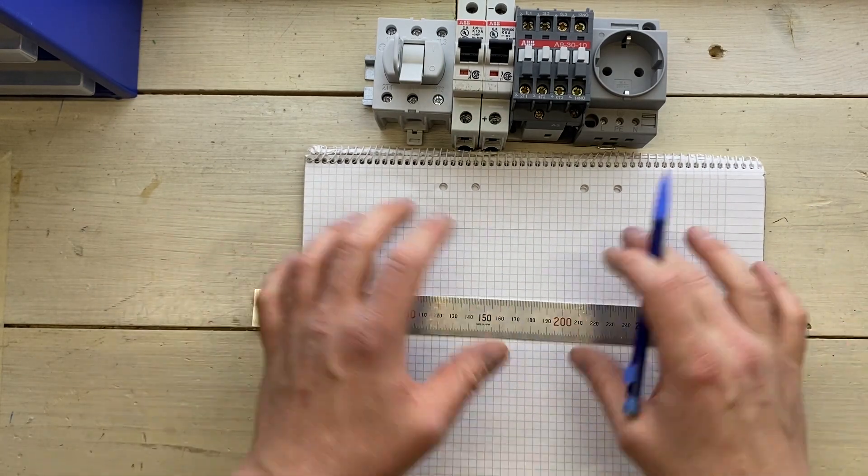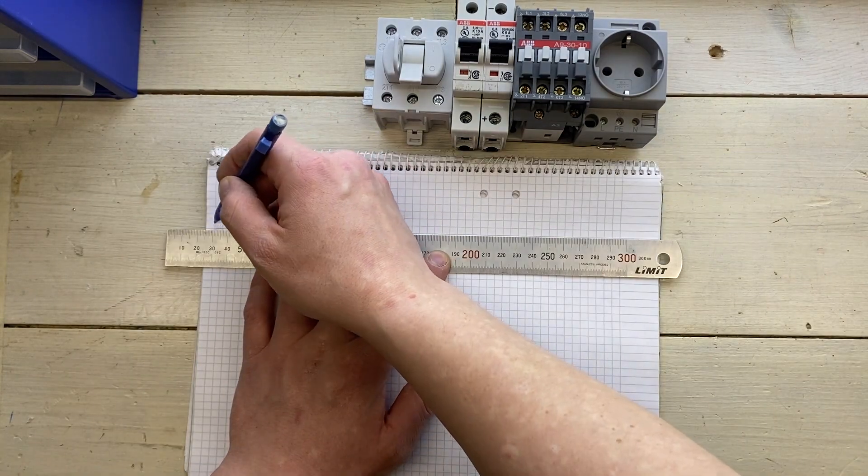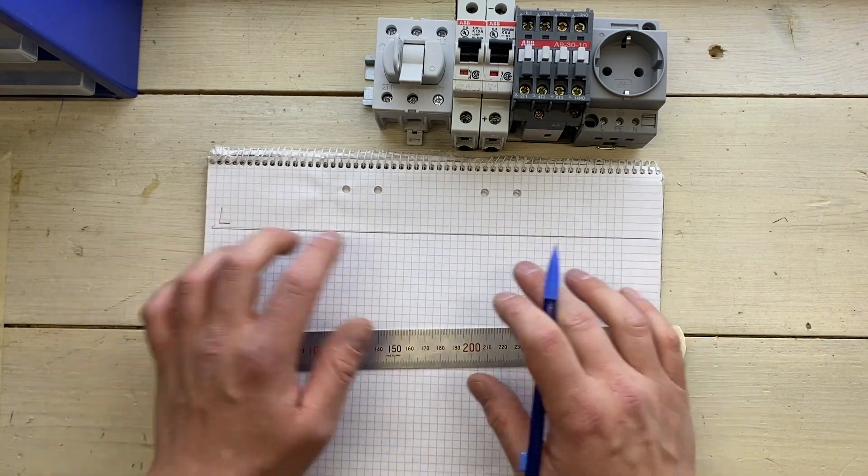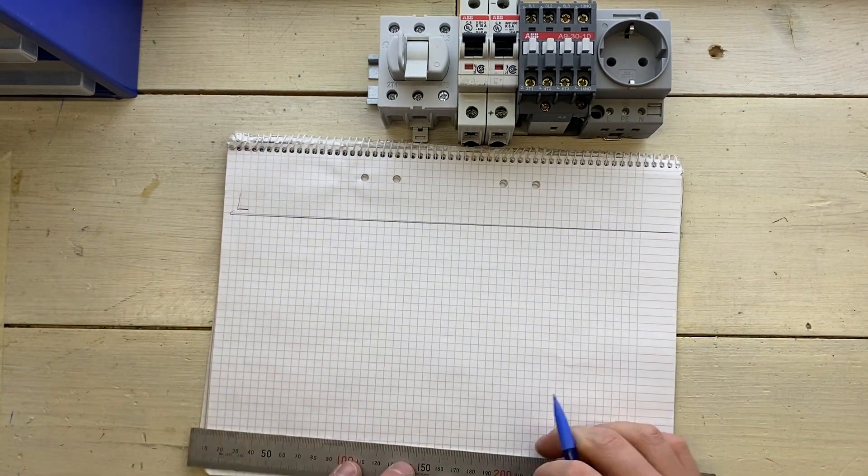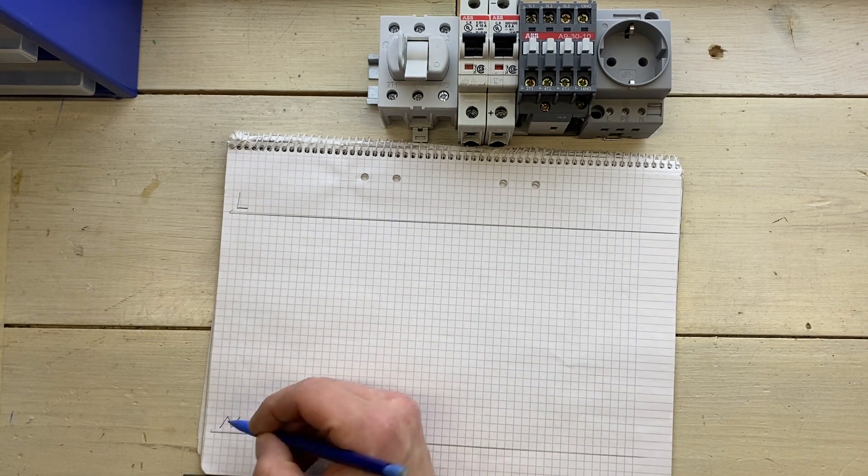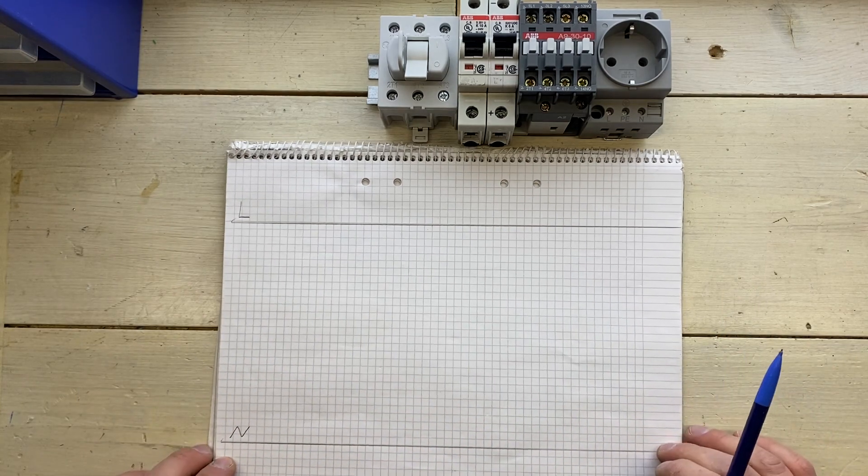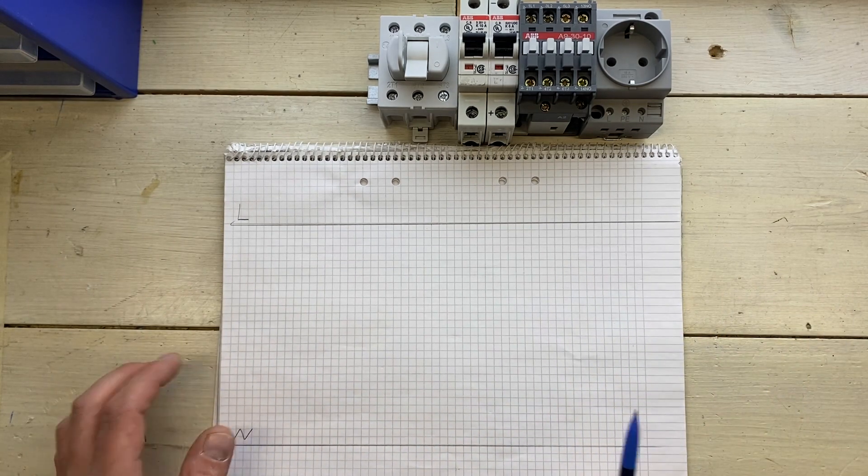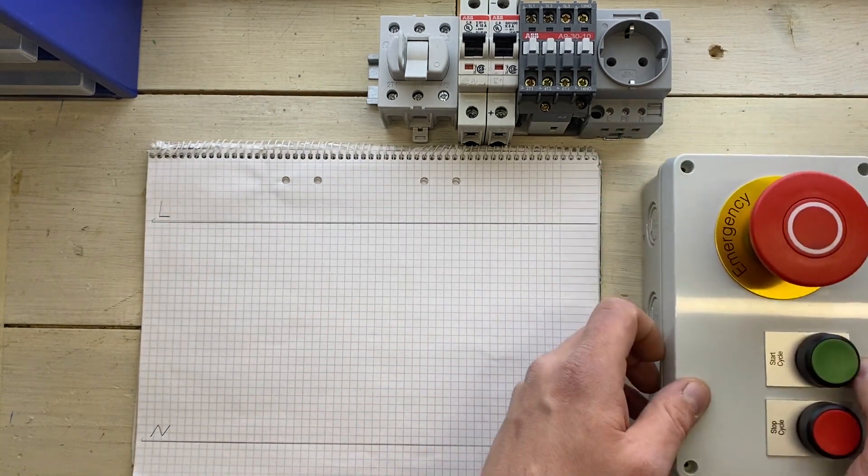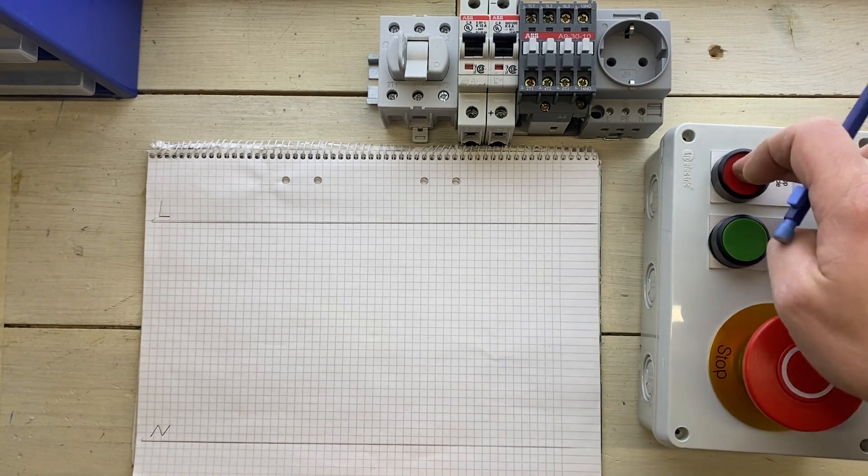So let's draw a basic schematic diagram of how this will work. So here we have L and that is line. That's the incoming 230 volt line. And down here we have the neutral. In a real diagram we would also have the PE, the protective earth down here, but I won't draw in that. So what do we have? We have two buttons or more precisely we have three buttons. We have an e-stop, we have on, we have off.